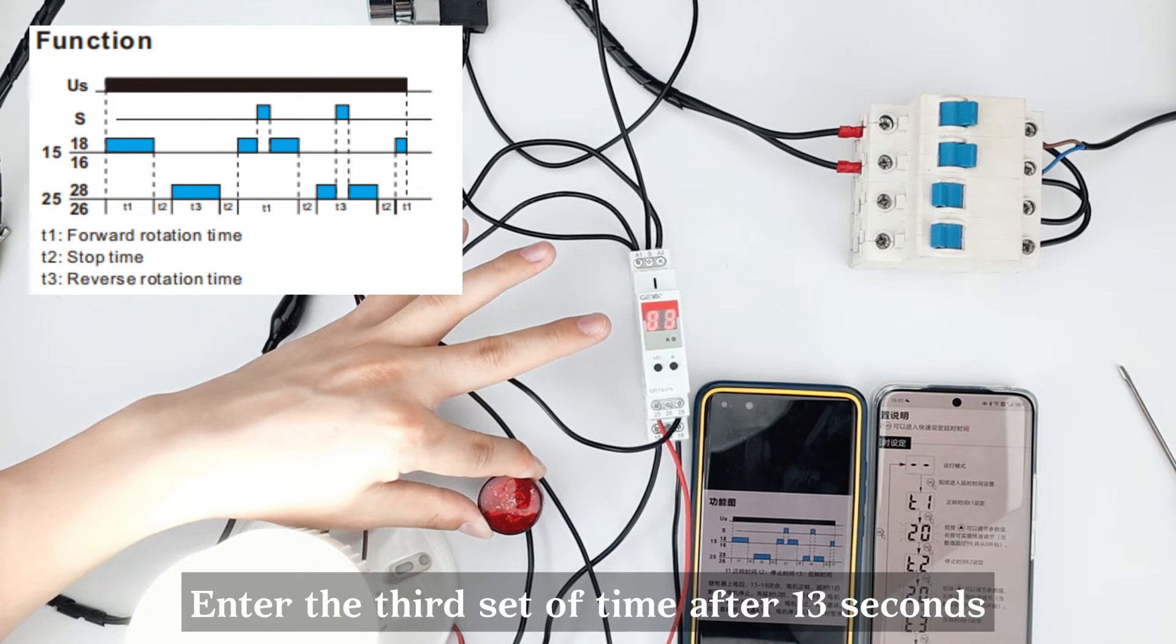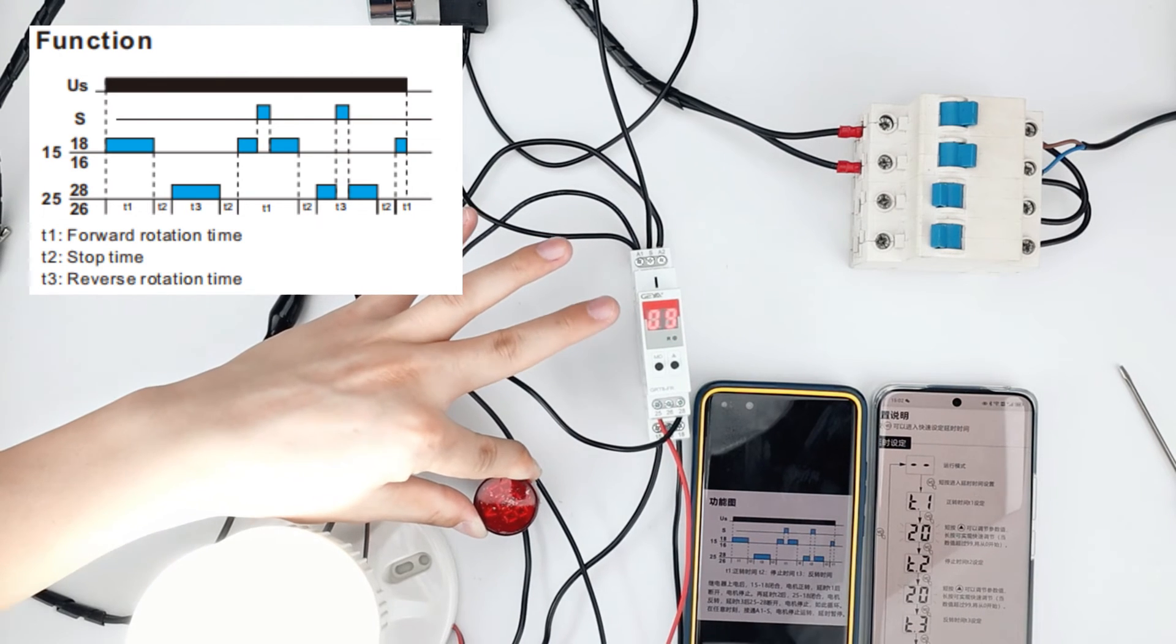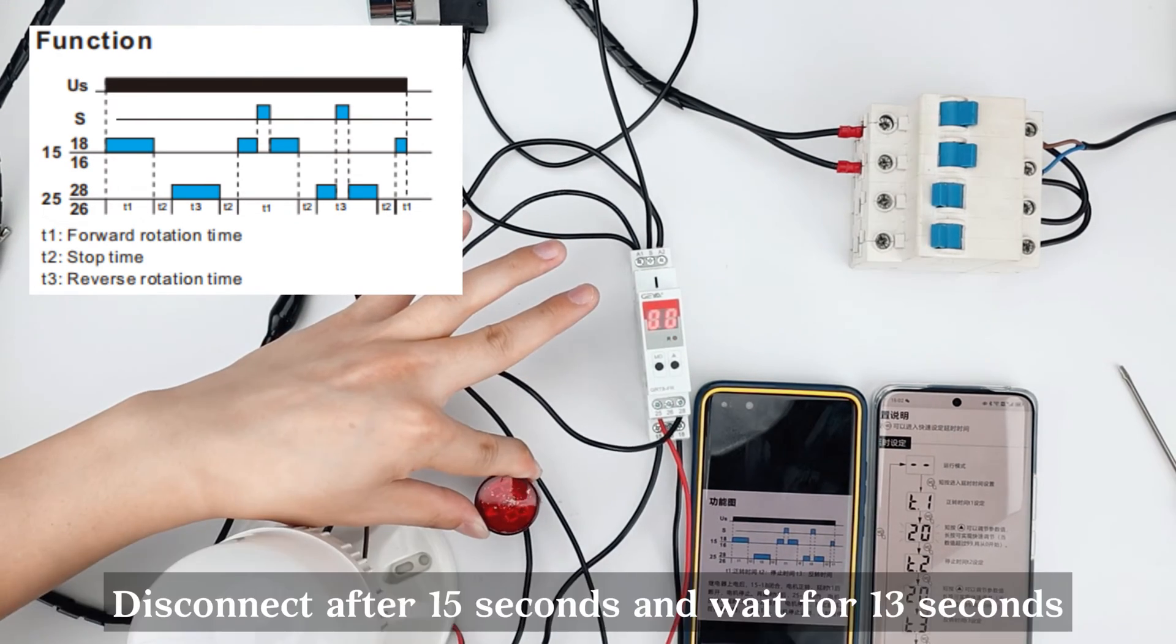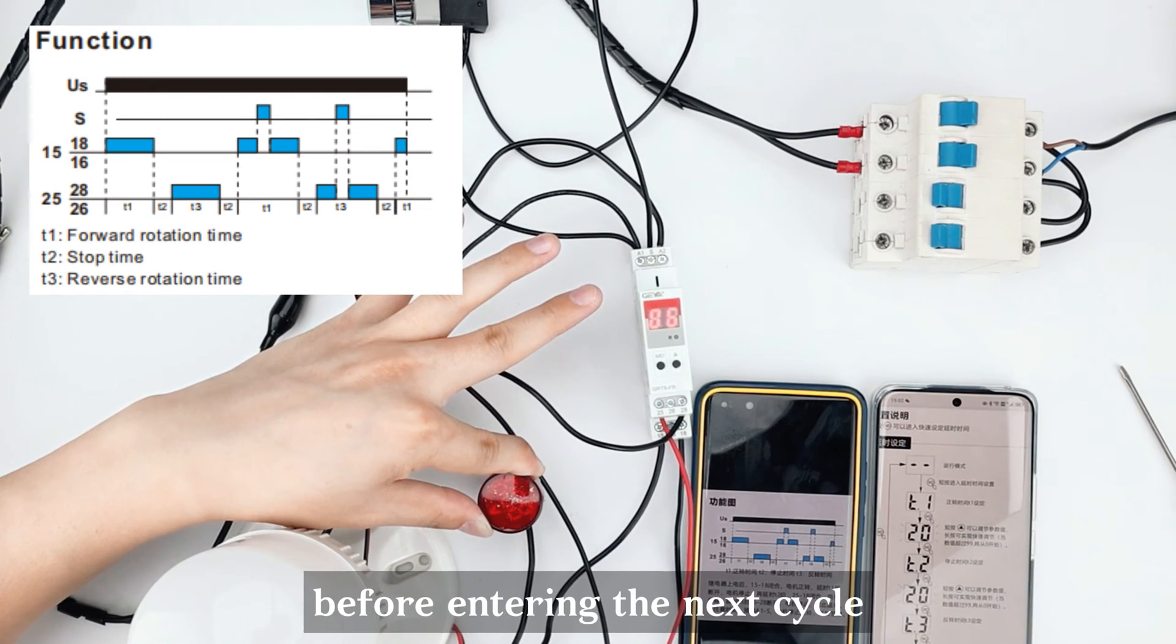Enter the third set of time after 13 seconds, and another load is powered on. Disconnect after 15 seconds and wait for 13 seconds before entering the next cycle.